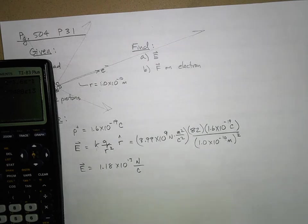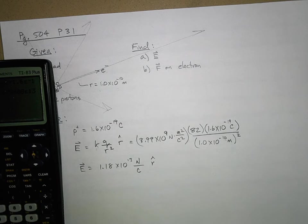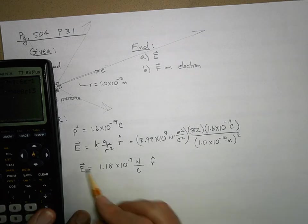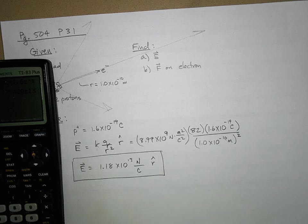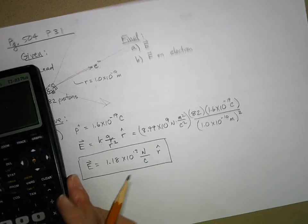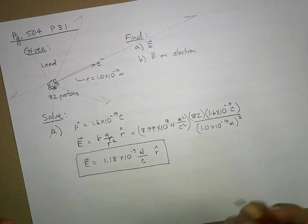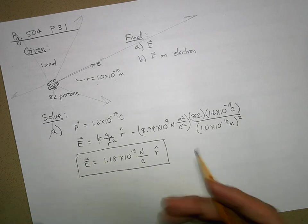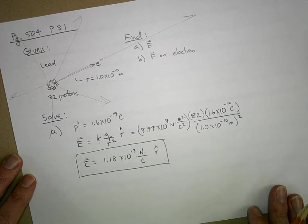What direction is it? It's in the positive r hat direction, which means away from the nucleus because it's a nucleus that carries a positive charge. So there's my answer. That's a lot of force. Of course, putting a whole coulomb of charge this close to an atom is impossible, but it's a ratio of force per unit charge.